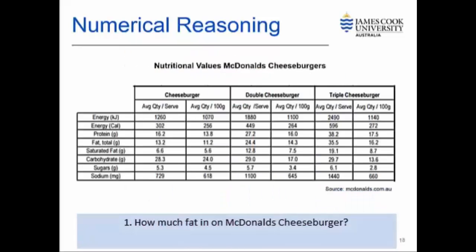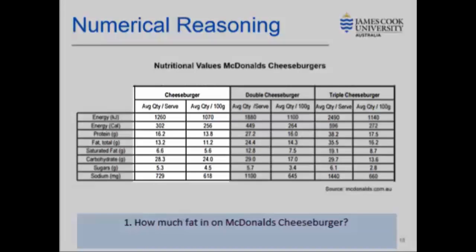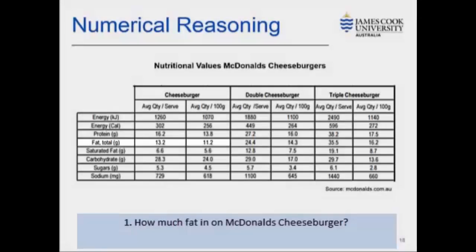Let's now turn to graph two. The first question asks how much fat is in a McDonald's cheeseburger. We can simply read the column headings to identify the relevant column for cheeseburger and then identify the row for fat on the left. When we do, we can see that the corresponding number is 13.2 for one serve and that the value is recorded in grams. So the answer for question one is 13.2 grams.